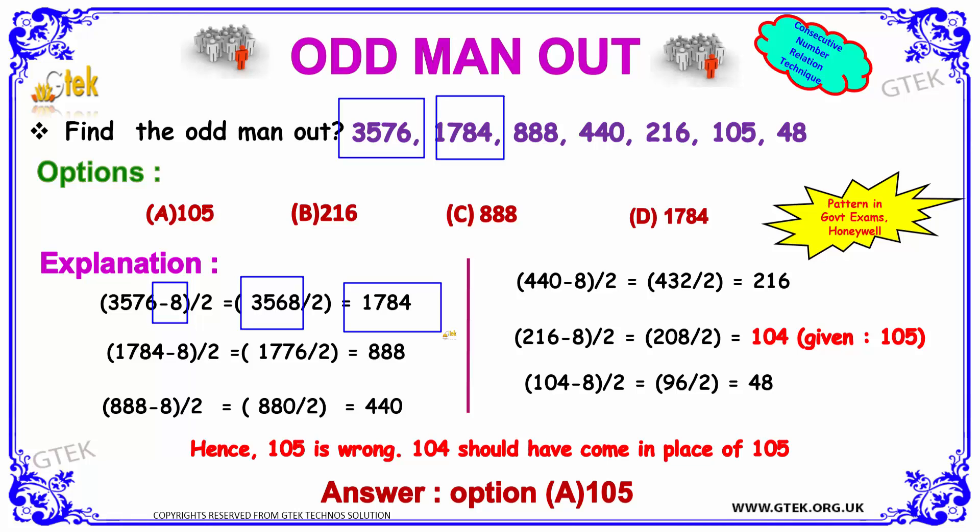Now I am trying to make it out as the same relation between this one and this one. 1784 and 888. 1784 minus 8 divided by 2. You got 1776 divided by 2, which is equal to 888.